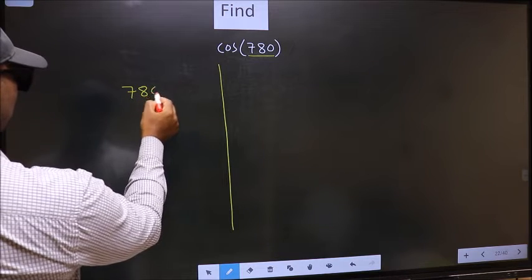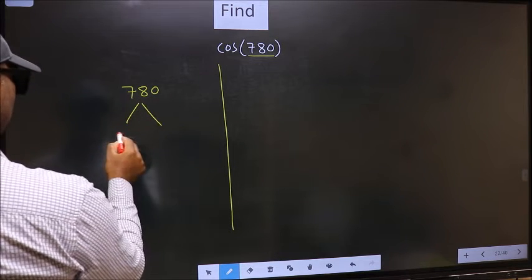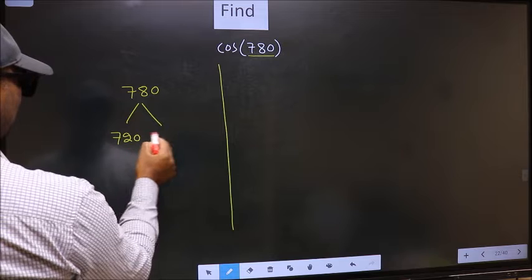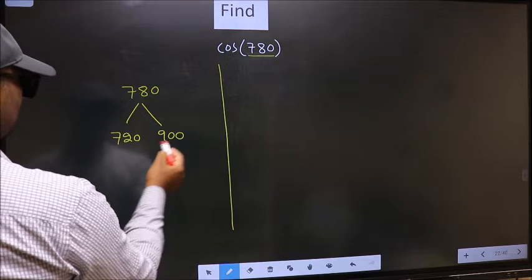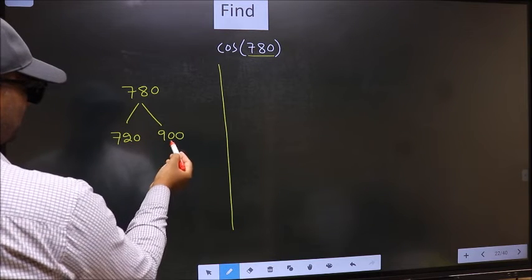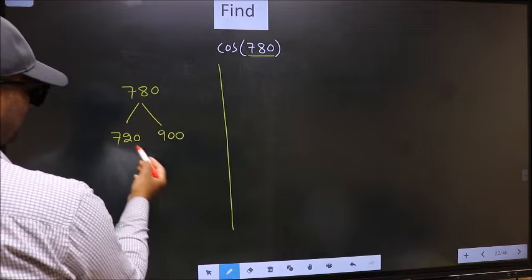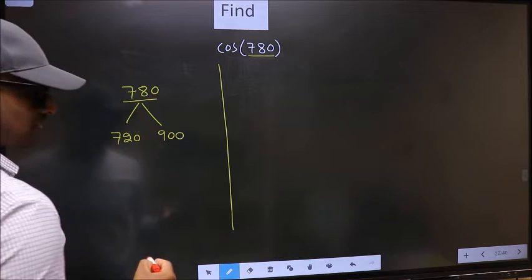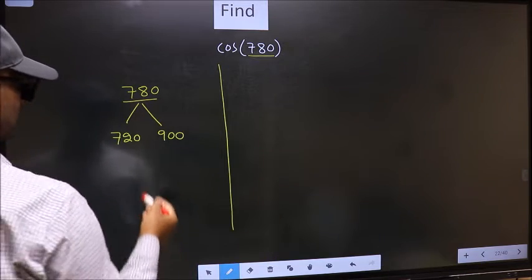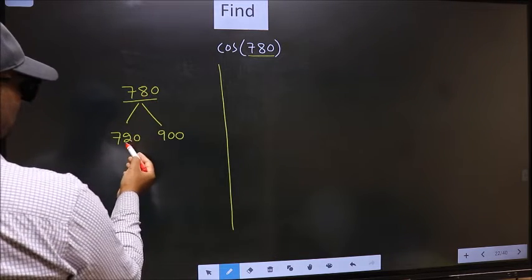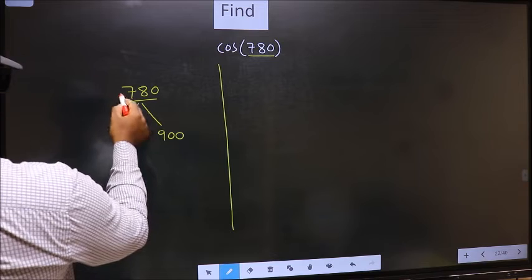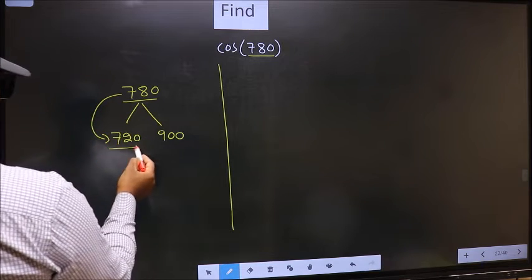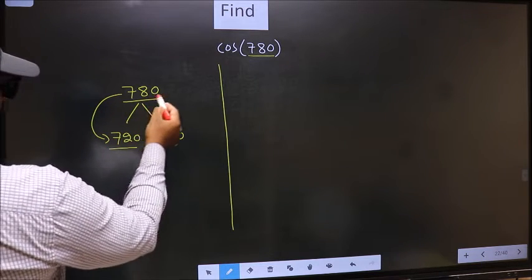780 lies between 720 and 900. This is 180×4 and this is 180×5. Between these two numbers, 780 lies. Next, 780 is close to which number? This is close to 720, so in place of this...